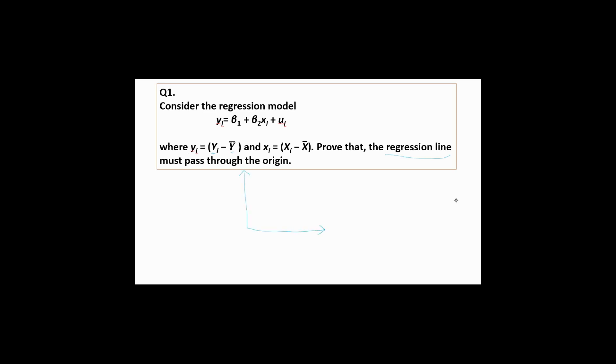we don't have any intercept. That means your β₁ cap will be 0. So let's find out if β₁ here can be 0. We have to show that your β₁ cap will be 0. So how do you find out the β₁ cap? The formula is ȳ bar minus β₂ cap times x̄ bar, right?